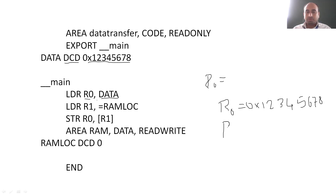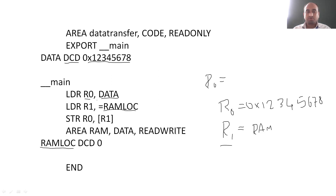Next, we are going to load the RAM location into R1 register. The RAM location will be loaded to R1. Here you can see 'ram_loc' — that is a label. The RAM location is defined as: ram_loc DCD 0. Whatever RAM location we are going to load into R1 will be done here. Next, STR R0, [R1] — that is, we are going to write the contents of R0 to the RAM location. The RAM location is already loaded into R1, so we store the contents of R0 to that address in R1.